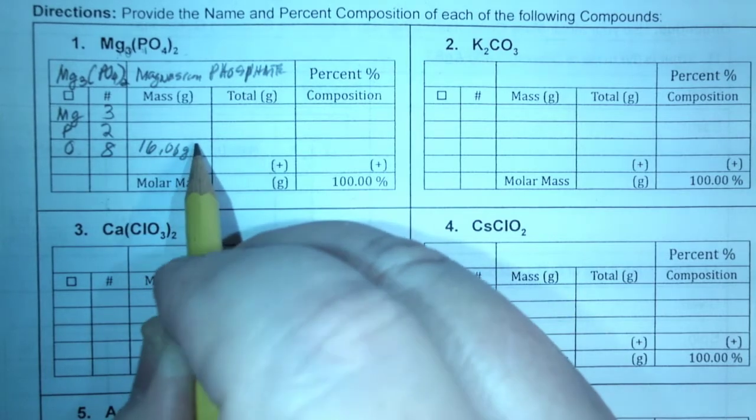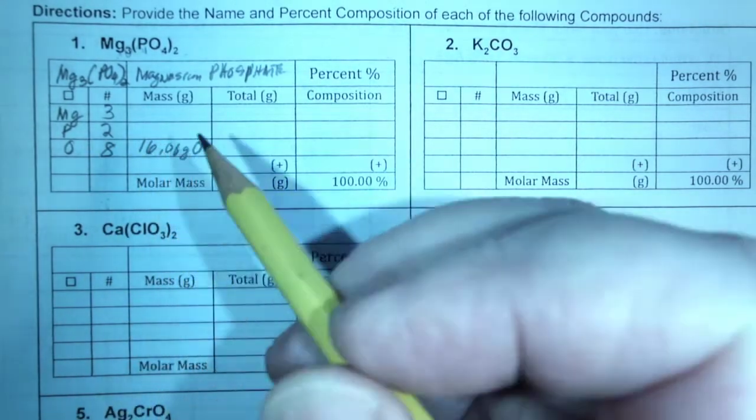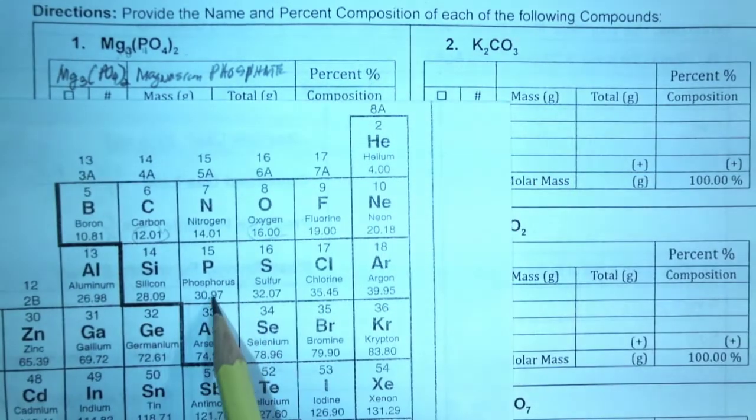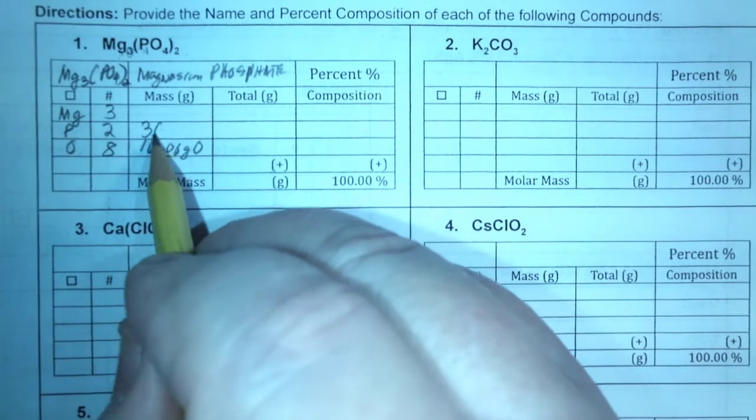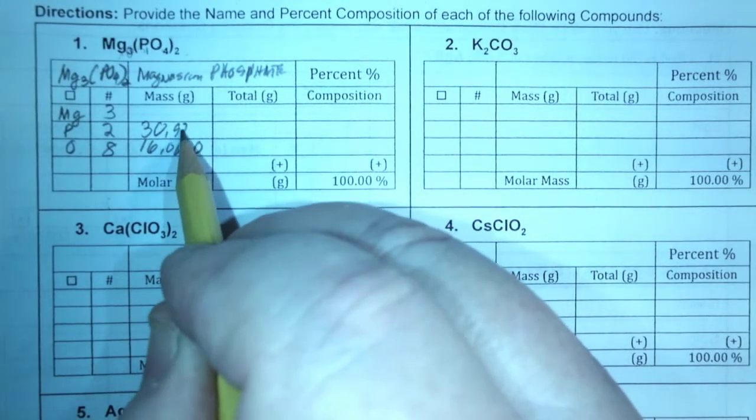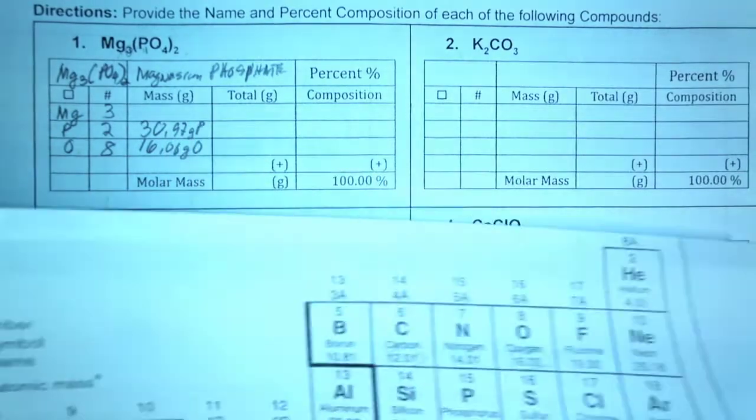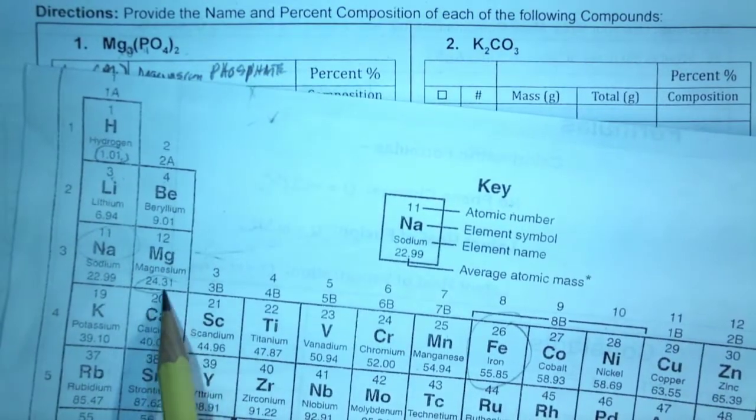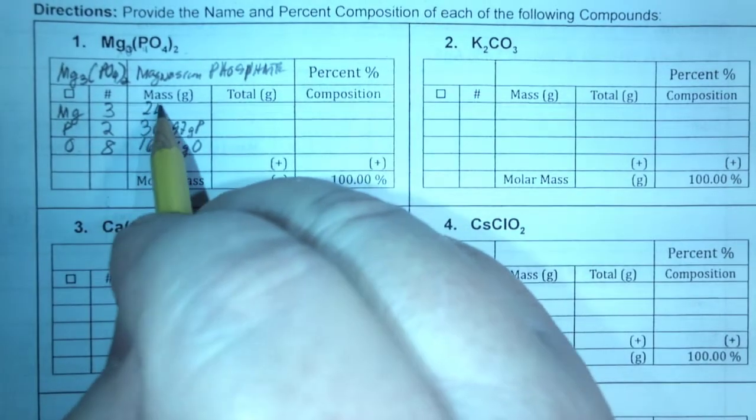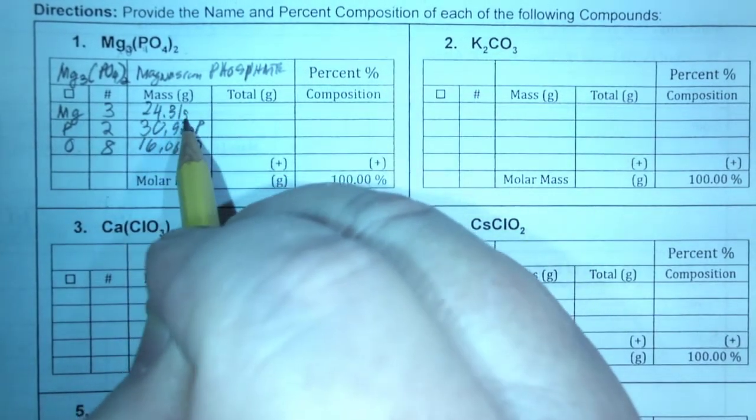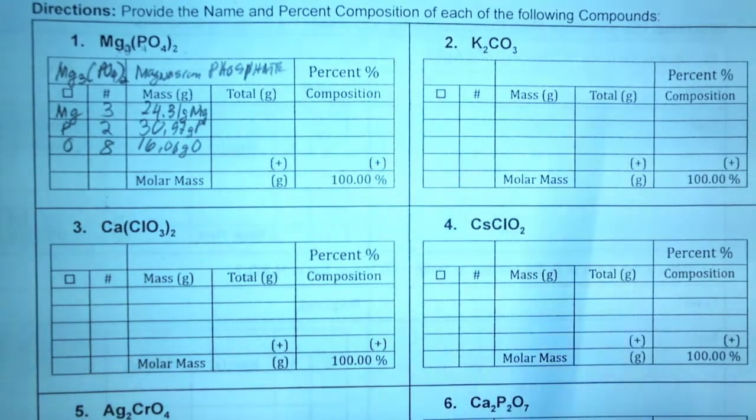So from your periodic table, you get the masses. And let's look for phosphorus here, 30.97 grams of phosphorus. And then we look for magnesium here, 24.31. And this is really a skill worth learning.